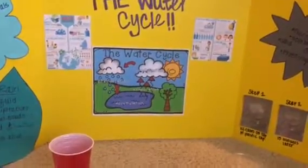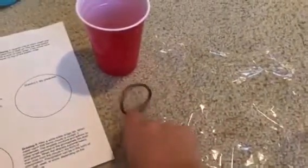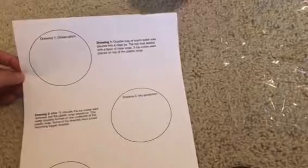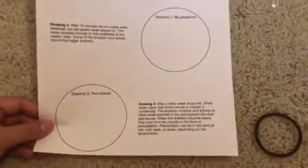I want to talk about what lab we would be doing. My lab consists of a cup filled with warm water — I would have bottled water that's room temperature or a little bit warmer. Then three ice cubes, clear wrap, and a rubber band to go over the cup. This is the observation sheet I would have at the center. It has fields for students to take down information: their initial observation and drawing, their observation after 15 minutes, their final observation, and their predictions.